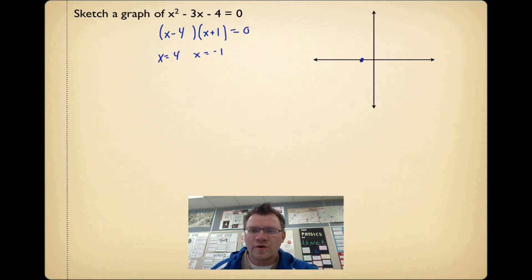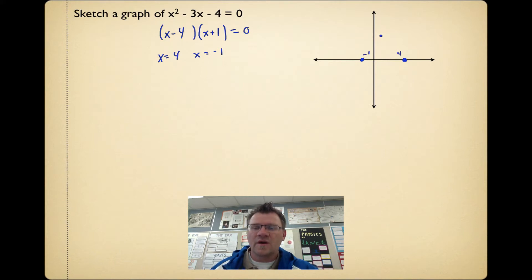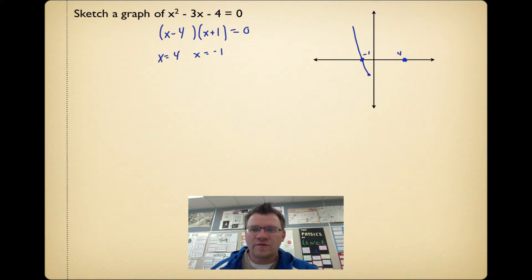The intercepts are somewhere around here, labeled as 4 and negative 1. As a parabola, we know that it goes through these two points and then back up. So there's a quick little sketch.